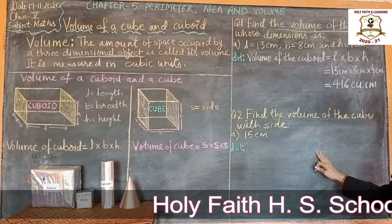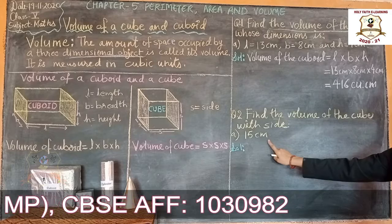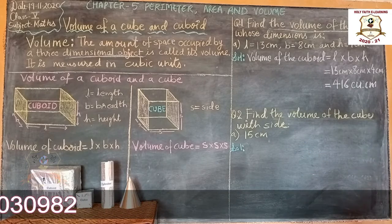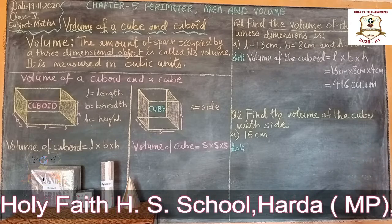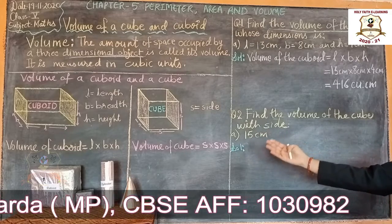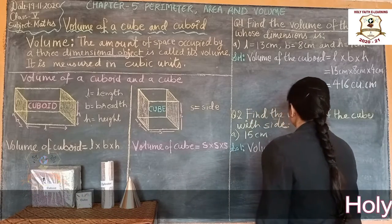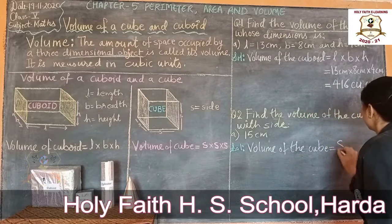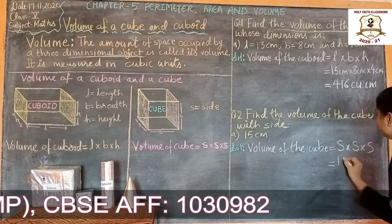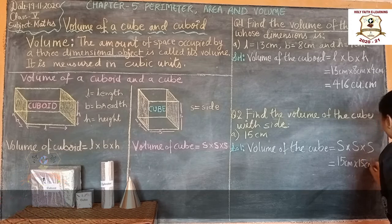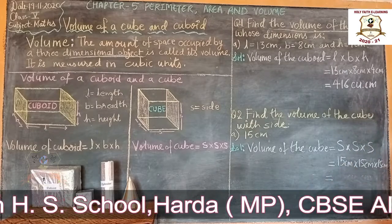Next question: Find the volume of the cube with side 15 cm. One side of the cube is given, and we know all sides of a cube are equal. The formula is: Volume = side × side × side = 15 cm × 15 cm × 15 cm. First, we multiply 15 × 15, which gives 225.